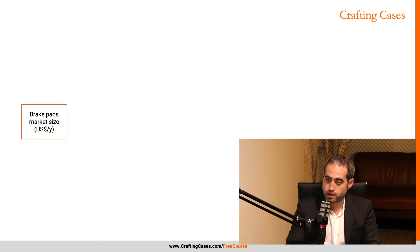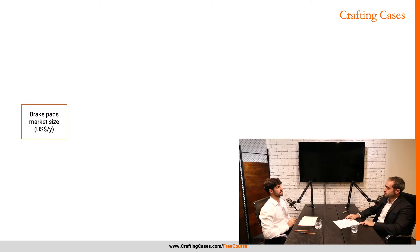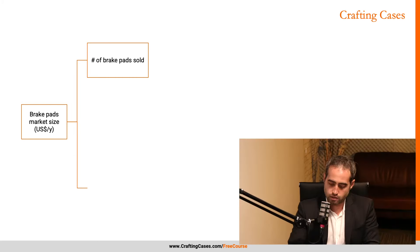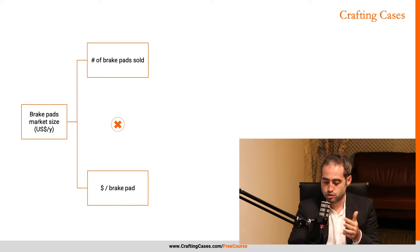I think I have a structure we can use to estimate this case. The way I would do this: find the dollar value of brake pads sold retail for personal use cars per year in the US would be to estimate first the number of brake pads sold per year in the US for that class of vehicles, and then multiply that by the dollar value or retail value on average per brake pad.